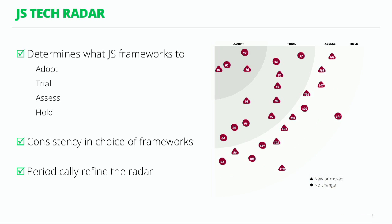Create a JS Tech Radar. This radar helps you standardize within the enterprise what frameworks to adopt — things that have worked well and been productive, so you continue using them. Trial is for projects that can absorb a bit of risk, where you believe something will work and can try it out. Assess is where you're spiking out with a piece of software to find out whether it will help. Hold is a recommendation to stop using something within an enterprise. This brings consistency to framework choices, since we are spoiled by choice in the JavaScript world. Periodically refine this radar so it stays current, curated by a group of key people.